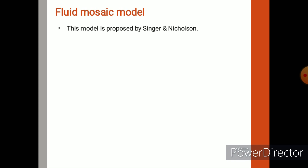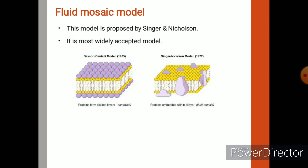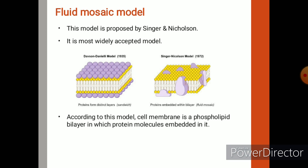Another model of cell membrane is the fluid mosaic model. It was proposed by Singer and Nicholson and is the most widely accepted model. According to this, the cell membrane is a phospholipid bilayer in which protein molecules are embedded. Just like proteins present like icebergs in a sea of lipids. If we zoom into the cell membrane, we can see a pattern of different types of molecules.